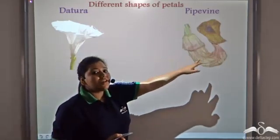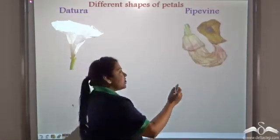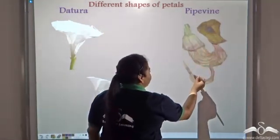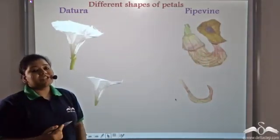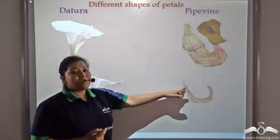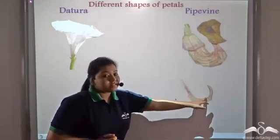But, in case of a pipe vine which is pipe shaped, if you see an individual petal, see, it is almost uniformly shaped. It is not broad or narrow at any point of the petal.